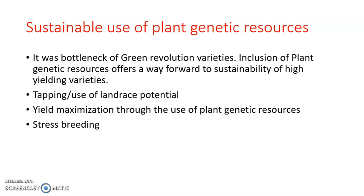The sustainable use of plant genetic resources was the bottleneck of the Green Revolution. The Green Revolution's main focus was to get higher yield, so only high-yielding varieties were selected. When these high-yielding varieties were selected, variation in the plants was reduced, which compromised the sustainable use of those varieties because they were not adaptable to the environment. However, modifying genes in these high-yielding varieties — reducing plant height and improving adaptability — can increase the sustainability of varieties selected during the Green Revolution.